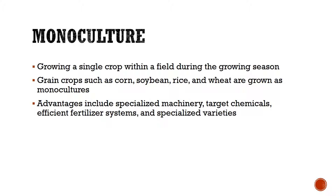Now let's look at monoculture versus polyculture. Monoculture is just growing one crop in a field during one specific growing season — whether that's a winter crop, a summer crop, you're just growing one crop. A lot of popular ones we see around this area are winter wheat, corn, rice in southern Oklahoma, and soybeans. We do this for several advantages. One big one is we can target chemicals — whether for fertilization or a micronutrient — and be very specific to what that chemical would be.